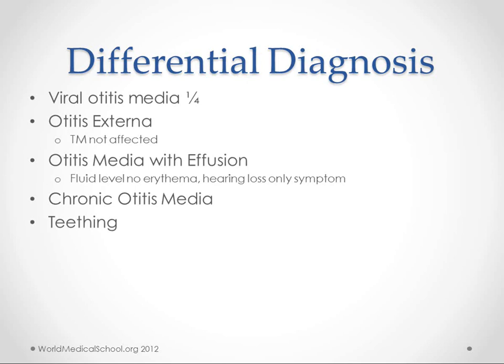Some things to make sure you're getting the right diagnosis: viral otitis media is about a quarter of cases, but we're probably just going to assume bacterial since it's more common and we don't want to miss it. Otitis externa will look differently — once you put the otoscope in, you'll see erythema on the ear canal and not on the tympanic membrane. Otitis media with effusion is a whole different animal — it's not caused by infection, though it can precede or follow one, so we don't treat it with antibiotics. Many cases have no symptoms, but there may be some hearing loss.